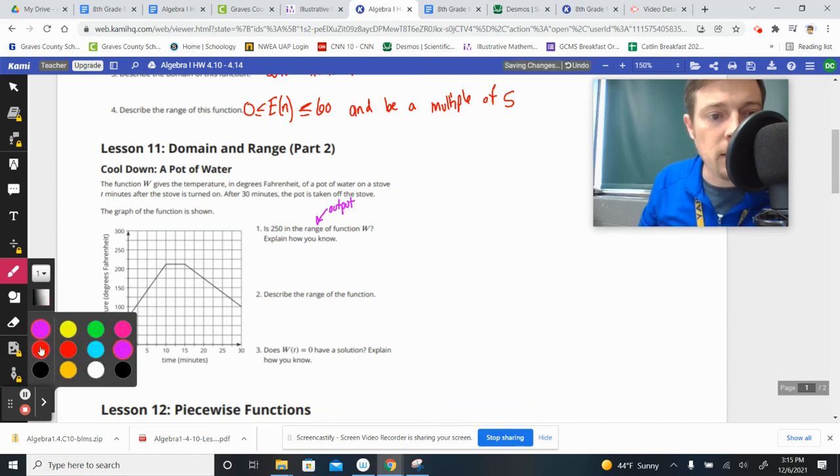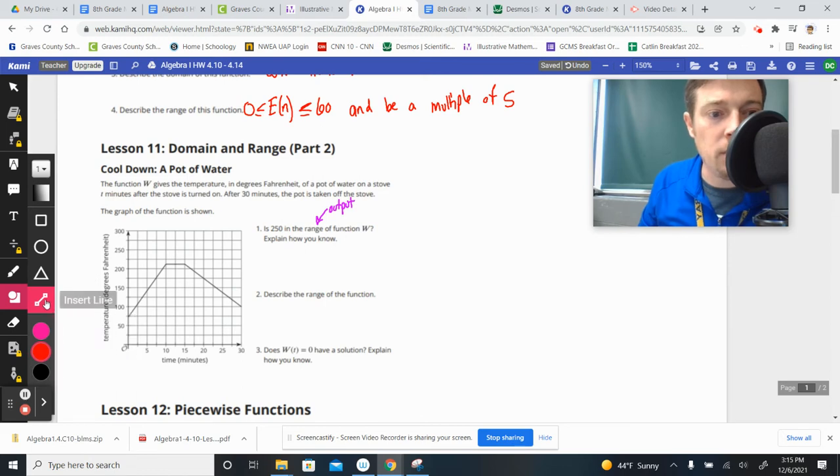So whenever I'm thinking of the range, I'm kind of making a window of all of the places where my outputs can lie. And this one looks like they brought it to a boil, so my range ranges from that red line all the way down to its lowest temperature, which is at this red line, right?